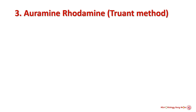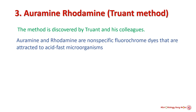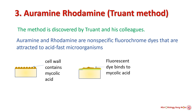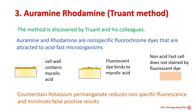The third acid fast staining procedure is the Auramine-Rhodamine method, also known as the Truant method, discovered by Truant and his colleagues. Auramine and rhodamine are non-specific fluorochrome dyes that are attracted to acid fast organisms. They can bind to mycolic acid present in the mycobacterial cell wall and allow the stain to penetrate. Non-acid fast cells do not take up these dyes. The counter stain potassium permanganate reduces non-specific fluorescence and minimizes false positive results.